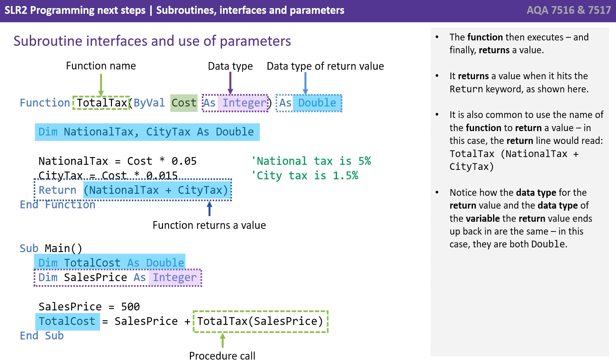Notice how the data type of the return value and the data type of the variable the return value ends up back in are the same. In this case, they are both double.